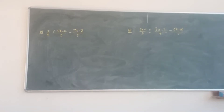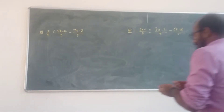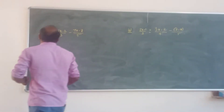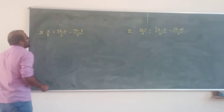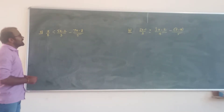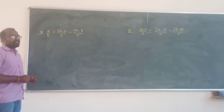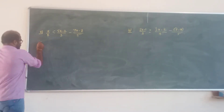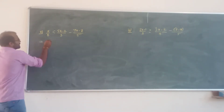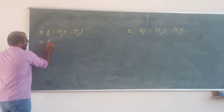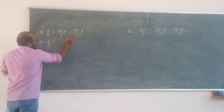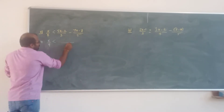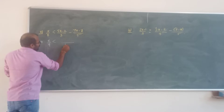Okay, note. x by 4 less than pi x minus 2 by 3 minus 7x minus 3 by 5. Similar thing: x by 4. Go to the LCM — LCM is 15.